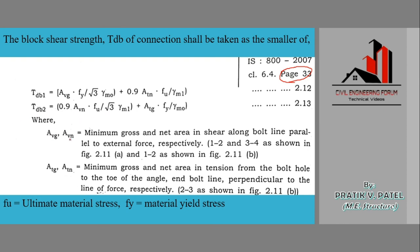The abbreviations are as follows: Avg, Avn, Atg, Atn. You will understand these abbreviations better from this figure. Fu is ultimate material stress as always, and Fy is the material yield stress.